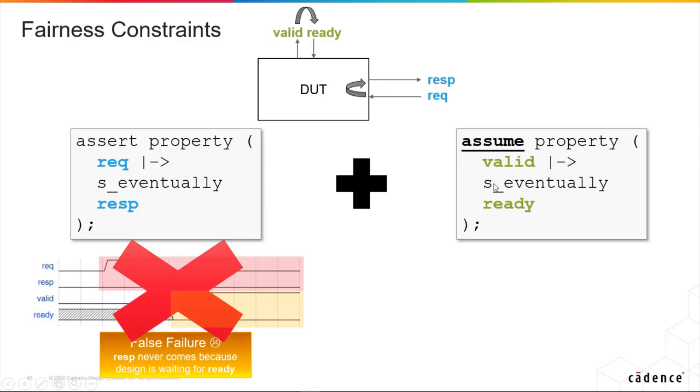If valid is true, we're saying s_eventually the tool has to drive ready to true. This excludes counterexamples where ready is being held low forever. So we would no longer see that counterexample if the design was actually correct.